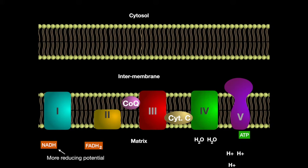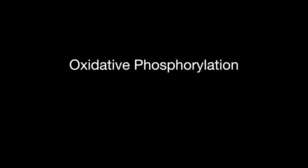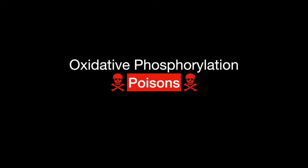NADH contains more reducing potential and thus creates more ATP. One NADH makes 2.5 ATP, while one FADH2 makes only 1.5 ATP.